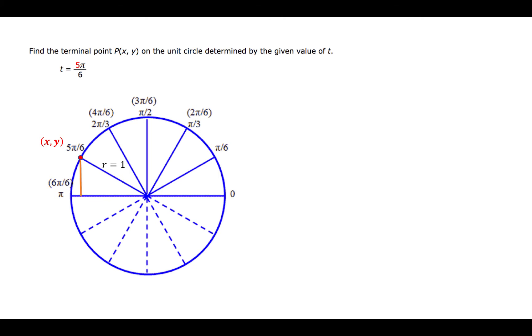We could begin by dropping a vertical from the point to the x-axis. This creates a triangle where one leg will be the x coordinate of our point and the other leg will be the y coordinate.